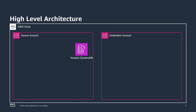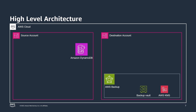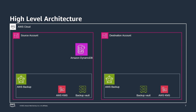This is how the high-level architecture looks. First, we will create a customer-managed KMS key in the destination account and share it with the source account. Then we will create a backup vault in the destination account using that KMS key and allow access to this backup vault from the organization. Similarly, we will create a customer-managed KMS key in the source account and share it with the destination account, then create a backup vault in the source account using that key, allowing access from AWS Organizations.